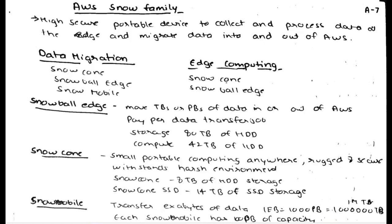We are discussing the AWS Snow Family. What is the Snow Family? It is a highly secure, portable device used to collect and process data at the edge, and to migrate data into and out of AWS. For example, if we are collecting data in the mountains or at an edge location with limited infrastructure, we can use Snow Family. There are portable devices available according to their size and computing capacity.